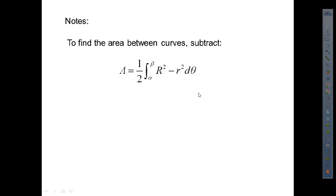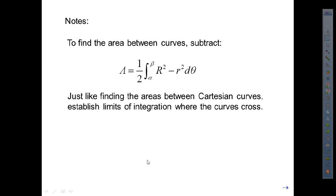To find the area between polar curves, subtract them the same way we did with rectangular coordinates. The formula is ½ times the integral from α to β of (R² − r²)dθ, where R is the bigger radius and r is the smaller radius. You have to establish limits of integration where the curves cross, because you may need to swap which is the bigger and smaller R.